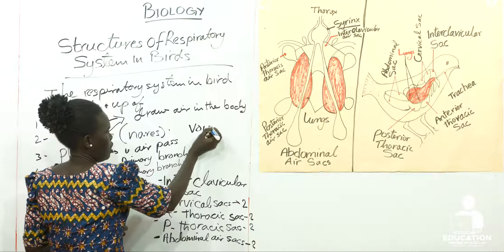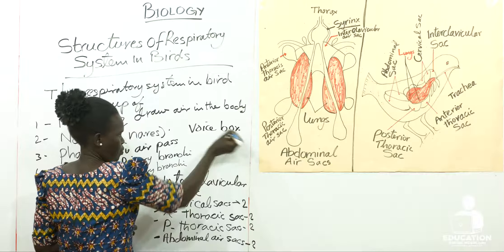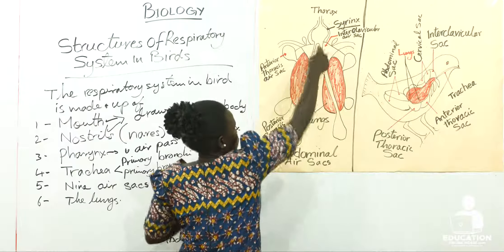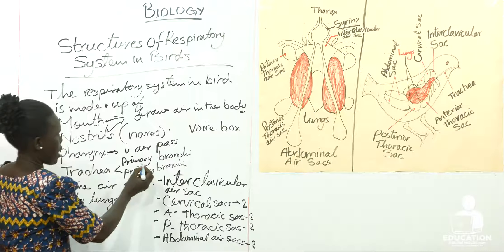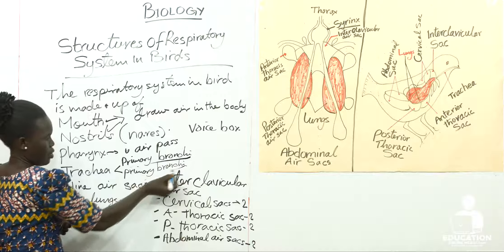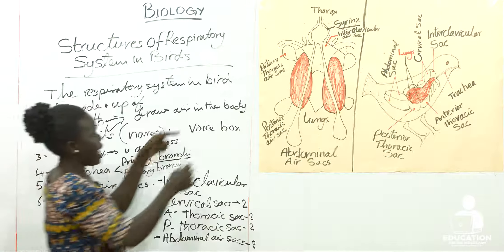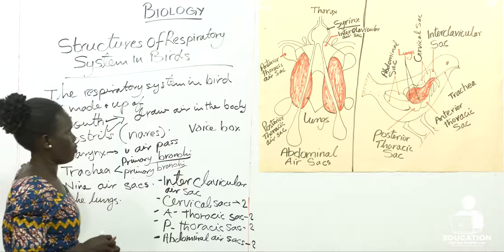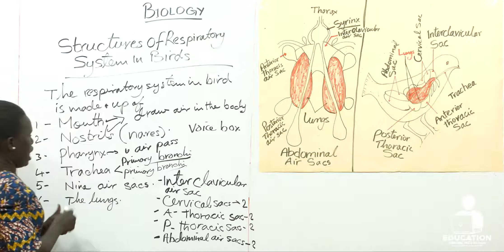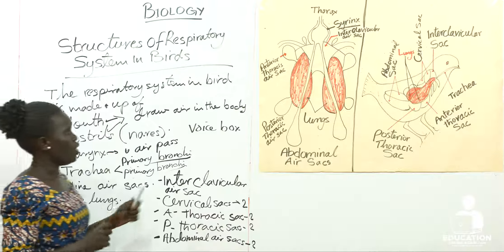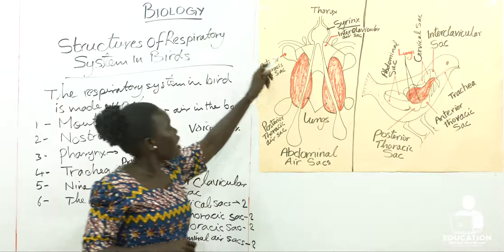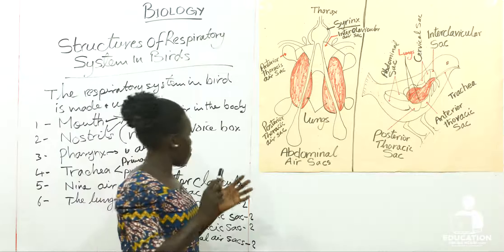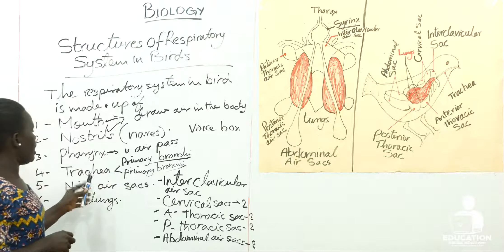When the trachea reaches this region it gets divided into two, and each branch is called a primary bronchus. The bronchi enter into the lungs. When air enters the lungs, it continues to flow. The air continues to flow through the bronchi. The trachea divides into two primary bronchi, and from those bronchi the air proceeds through the lungs.